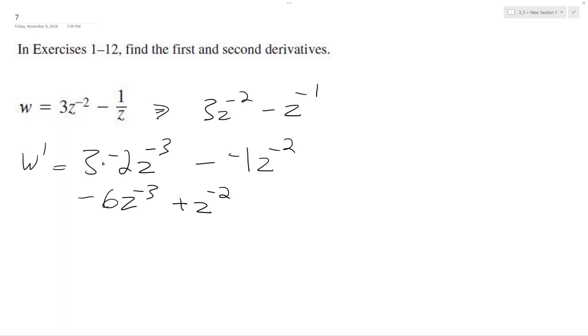And depending on how you want to do this, you can actually rewrite this as negative 6 over z raised to the 3 plus 1 over z raised to the second.